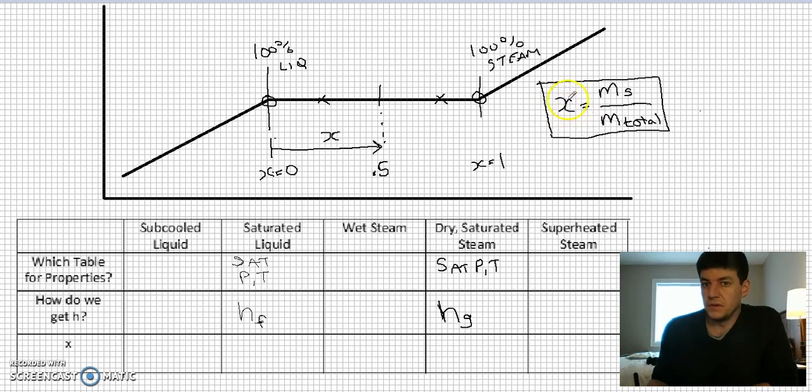X has a few other terms. Sometimes it's the dryness. That's a commonly used term, dryness. Quality is another—the quality of the steam. Dryness factor, dryness fraction. This has a whole lot of different terms that come out. But basically what it's telling me is how dry is the steam or how close am I to 100% evaporated.